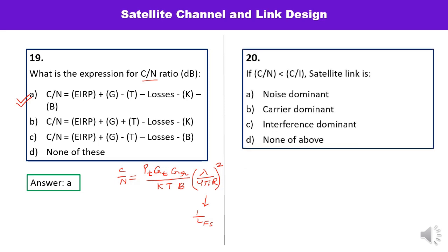Next question: if carrier to noise ratio is less than carrier to interference, what type is the satellite link? If C/N < C/I, then the interference denominator is smaller, meaning noise is higher than interference. When noise is higher than interference, the type of satellite link is noise dominant.